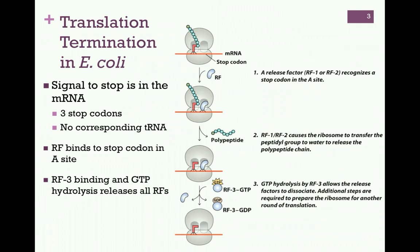It then causes the ribosome to transfer the peptidal group to water, thereby releasing the polypeptide chain. Now we have the deacetylated tRNA in the p-site and the release factor in the a-site. Binding of RF1 or RF2 is promoted by another release factor, RF3, bound to GTP. GTP hydrolysis allows all of the release factors to dissociate.